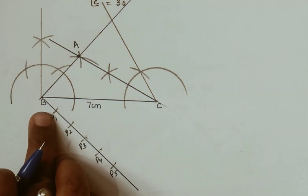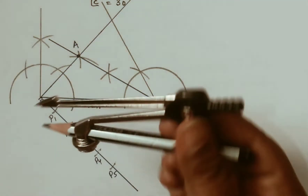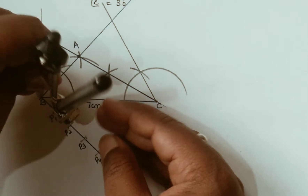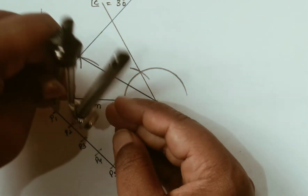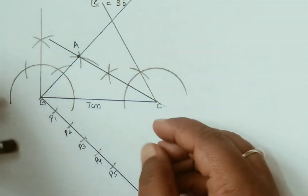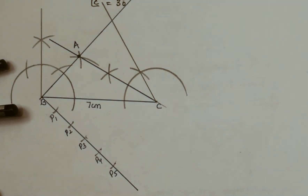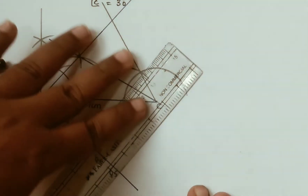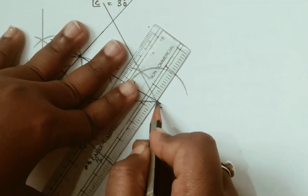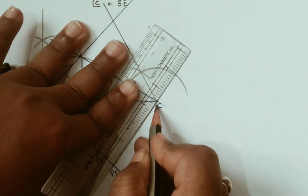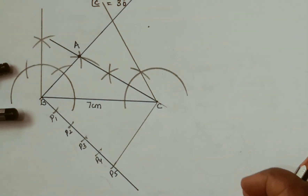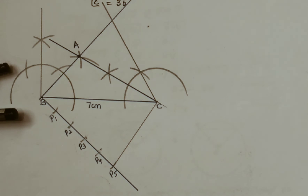Now you have to take an 11-part arc line here from B. Draw a ray and mark 5 equal arcs of 1 centimeter each — 1, 2, 3, 4, 5. So you divide this line into 5 equal parts. Then now you are going to join the last point P5 to C.